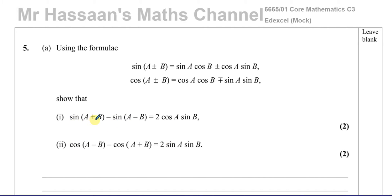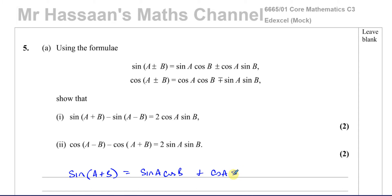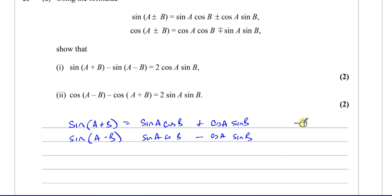The first one involves sine(a+b) and sine(a-b). I'm going to write down sine(a+b) using the formula: sin(a+b) = sin(a)cos(b) + cos(a)sin(b). And sin(a-b) is the same but with a minus: sin(a)cos(b) - cos(a)sin(b). I'll call these equation 1 and equation 2.